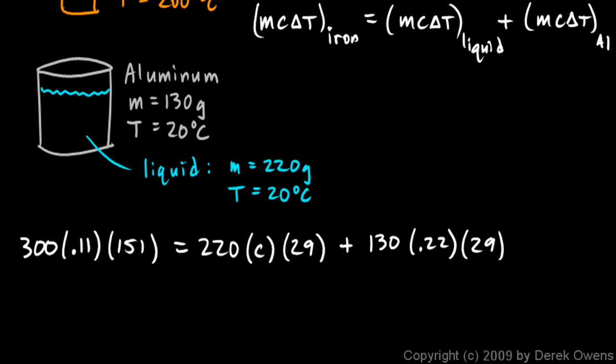Now this one's pretty easy. We just multiply 300 times 0.11 times 151. That comes out to 4,983. That equals 220 times 29 times C. That comes out to 6,380 C plus 130 times 0.22 times 29. That comes out to 829.